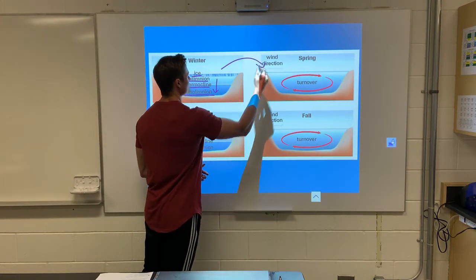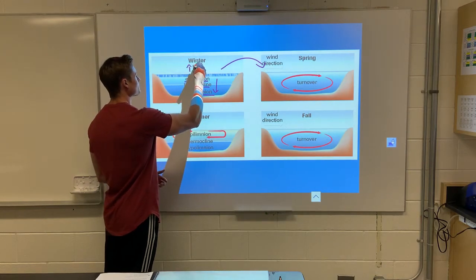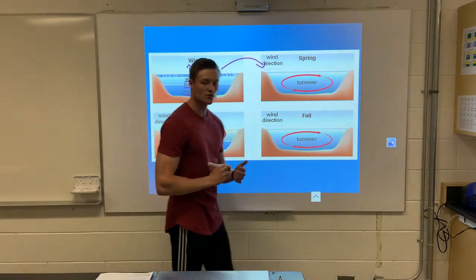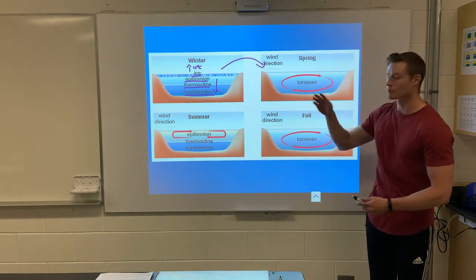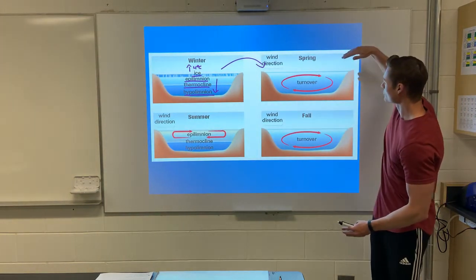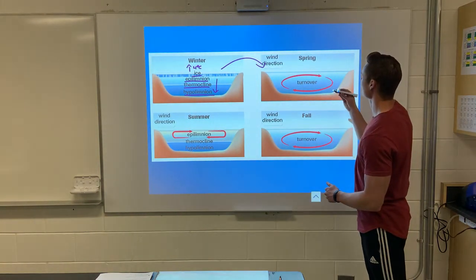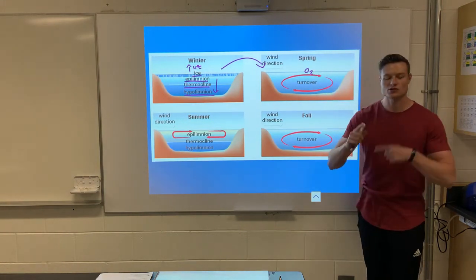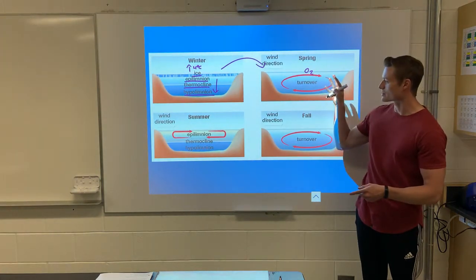As we move from winter to spring, something interesting happens. The top ice layer warms up to four degrees Celsius, becoming denser than the water below it, so it falls to the bottom of the lake, pushing the bottom water to the top. We call this spring turnover, and spring turnover recycles dissolved oxygen throughout the lake.